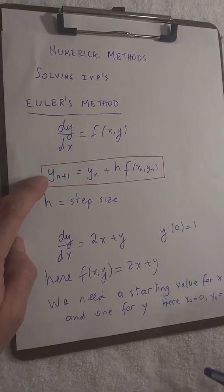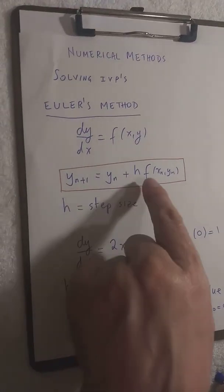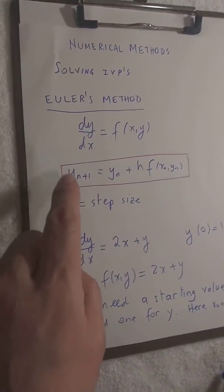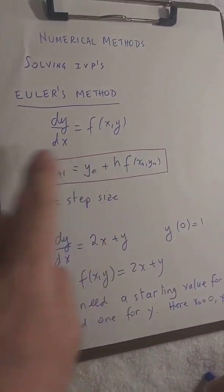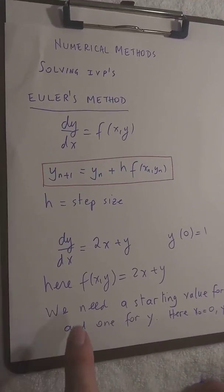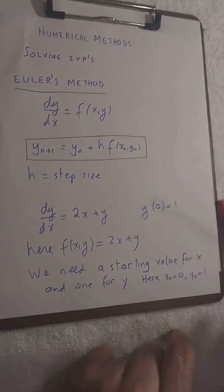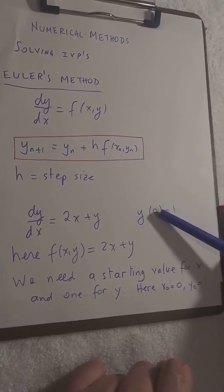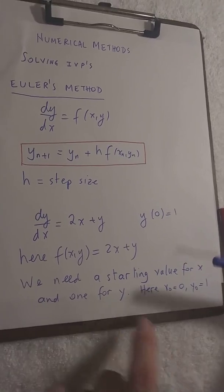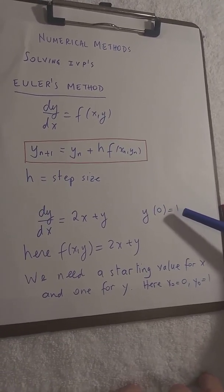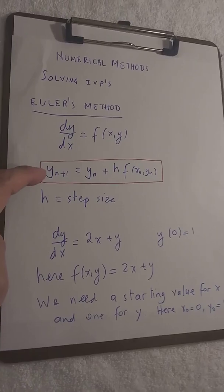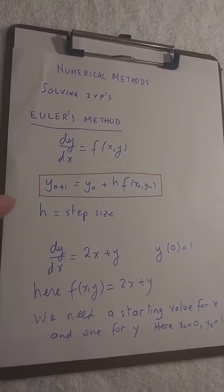From x0 and y0, this formula will allow us to find y1. Then you put y1 back on the right side and you get y2. Then you put y2 on the right side and you get y3, etc. This formula gives you yn+1, which means next y. So if you know y0 you can get y1, if you know y1 you can get y2, and so on.